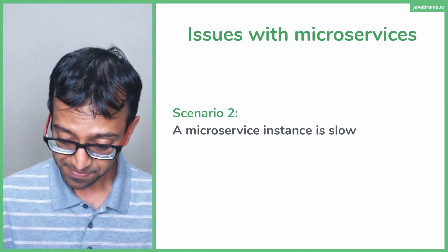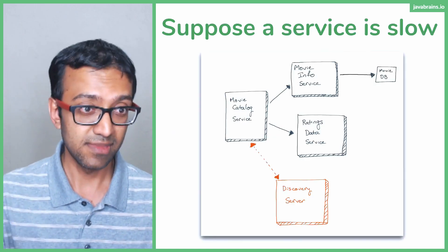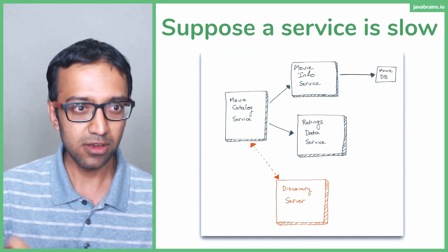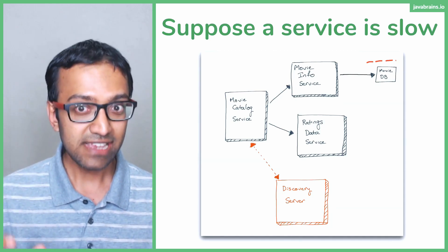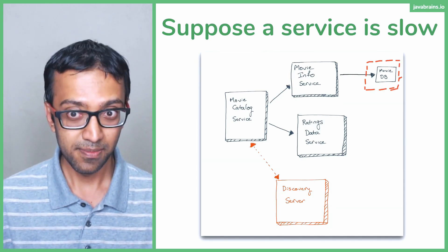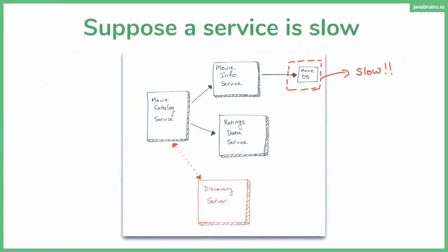And I'll tell you why. Let's say we made a call to an external service, and that external service is slow. As a result, your movie catalog service becomes slow. This is the path it takes: it makes a call to one service, gets the information, then makes a call to another service, which calls another. So if that one is slow, this becomes slow.